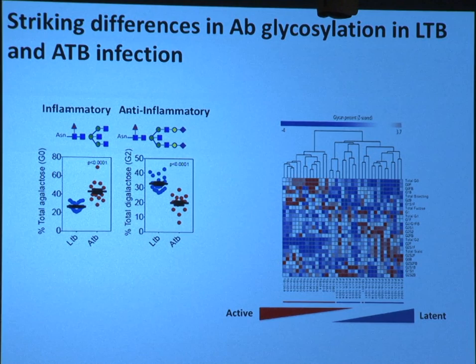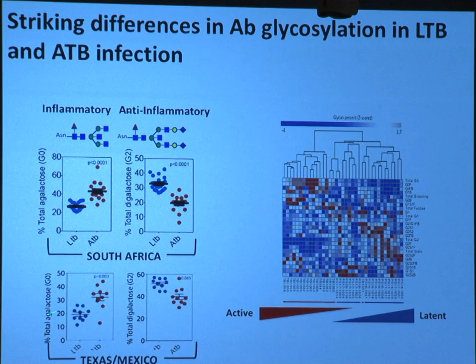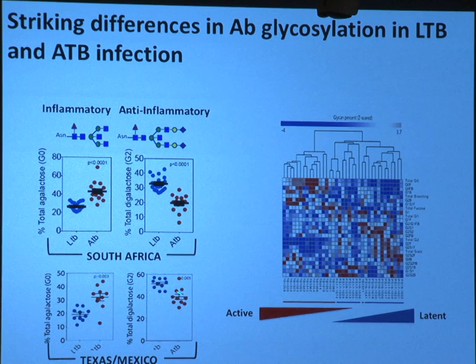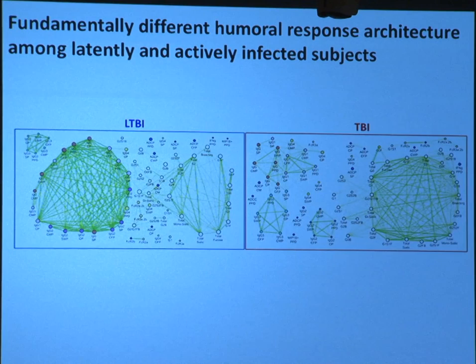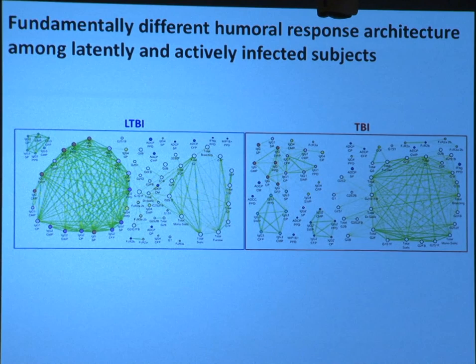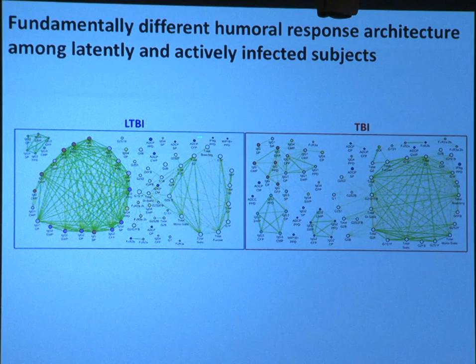These antibody profiles can be looked at as networks — think about how antibodies work together as immune complexes. Doug Lauffenberger's group helped us generate networks of these antibody features. Looking at the networks of antibody features induced in latent versus active disease, we see fundamentally different architectures in how these antibodies drive control of those particular bacteria, really strongly influenced by the glycans on the TB-specific antibodies.